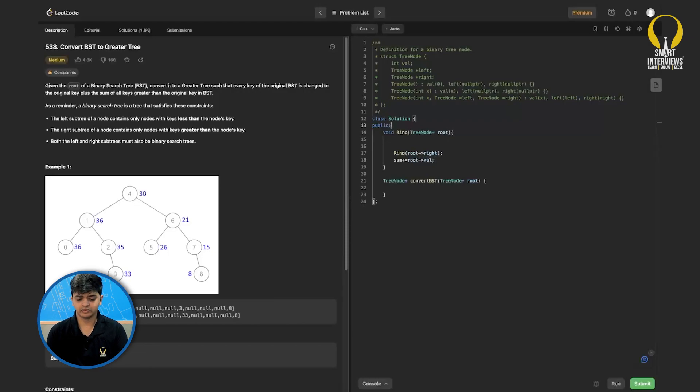Then, I will do sum plus equals root dot value. But now I should also declare a global sum variable. So int sum equals 0 and then I will do root dot value equals sum. Then I will do the same thing on the left side. So reverse in-order on root dot left.